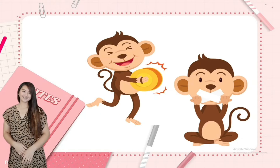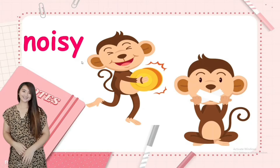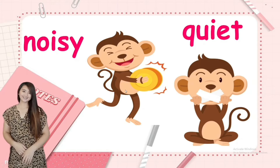Next, we have noisy and quiet. This monkey is noisy and this monkey is quiet. Everybody say: a noisy monkey, a quiet monkey. Noisy and quiet — these are opposite ways.